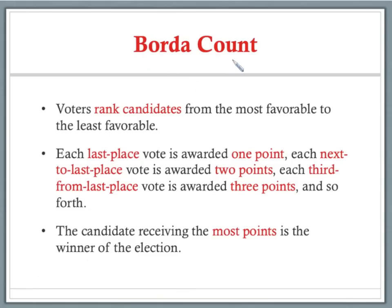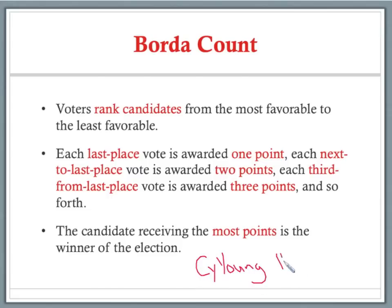Next is the Borda count. In this type of voting, voters rank the candidates from most favorable to least favorable, so we use the whole preference table. Each last place vote is awarded one point, each next-to-last place vote gets two points, each third-from-last gets three points, and so forth. When we total up all the points, whichever candidate receives the most points is the winner. This method is definitely used in sports voting — this is how the Cy Young Award and the Heisman Trophy winner are chosen.